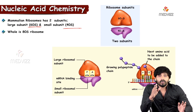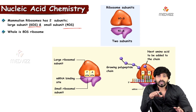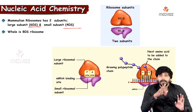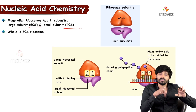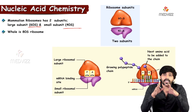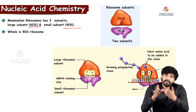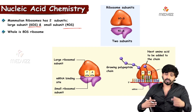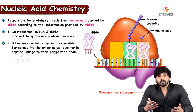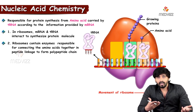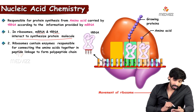The A site is where the tRNA carrying an amino acid comes and attaches, then transfers its amino acid to the P site. The P site is the site for protein synthesis, where amino acids bind one after another to form a peptide or protein. Once the tRNA transfers its amino acid to the P site, it leaves the A site, and a new tRNA joins. This rRNA is responsible for protein synthesis from amino acids carried by tRNA, using information provided by mRNA. In ribosomes, mRNA and tRNA interact to synthesize the protein molecule.